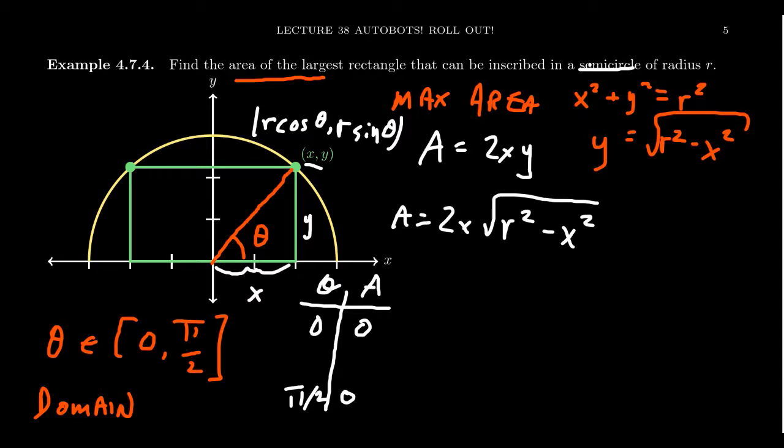And so, our area function, if we take 2x, that gives us 2r cos(θ). And if we take y, that's r sin(θ). We can rewrite this as 2r² cos(θ) sin(θ).